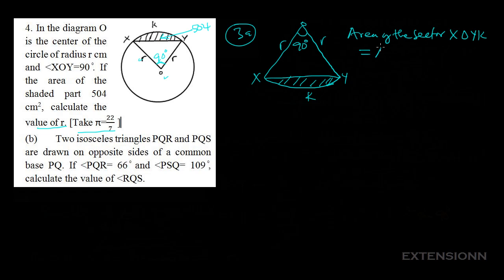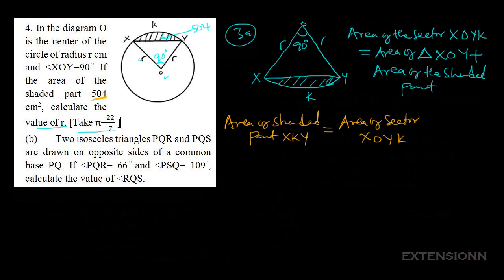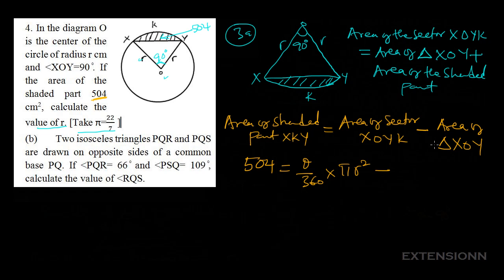So we write: area of sector XOY equals area of triangle XOY plus area of the shaded part. The area of the shaded part was given as 504 centimeters squared. Making the shaded area the subject of the formula, the area of shaded part XKY equals area of sector XOY minus area of triangle XOY.